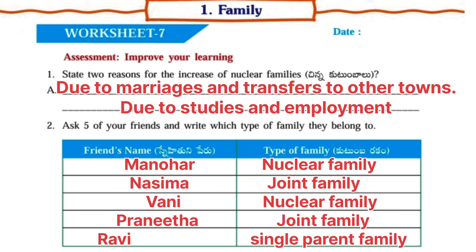Second one — Ask five of your friends and write which type of family they belong to. Here you have to write your friend's name and the type of their family. First one: Manohar — nuclear family.